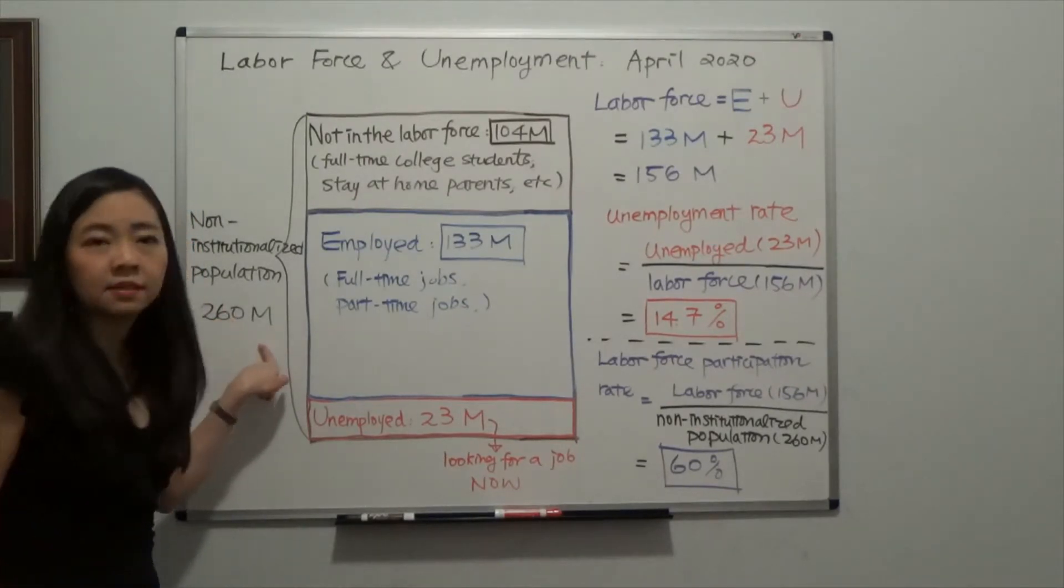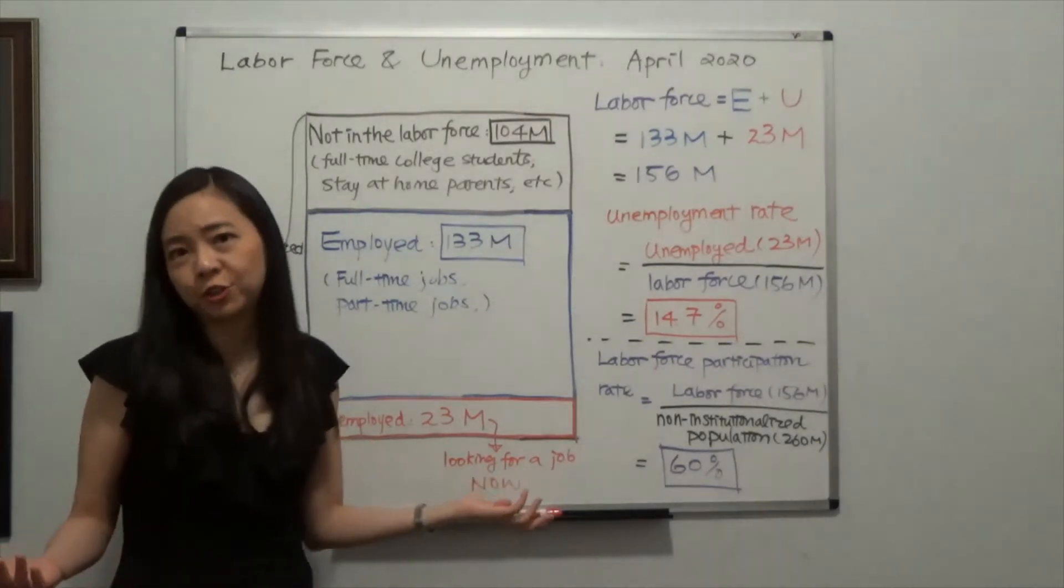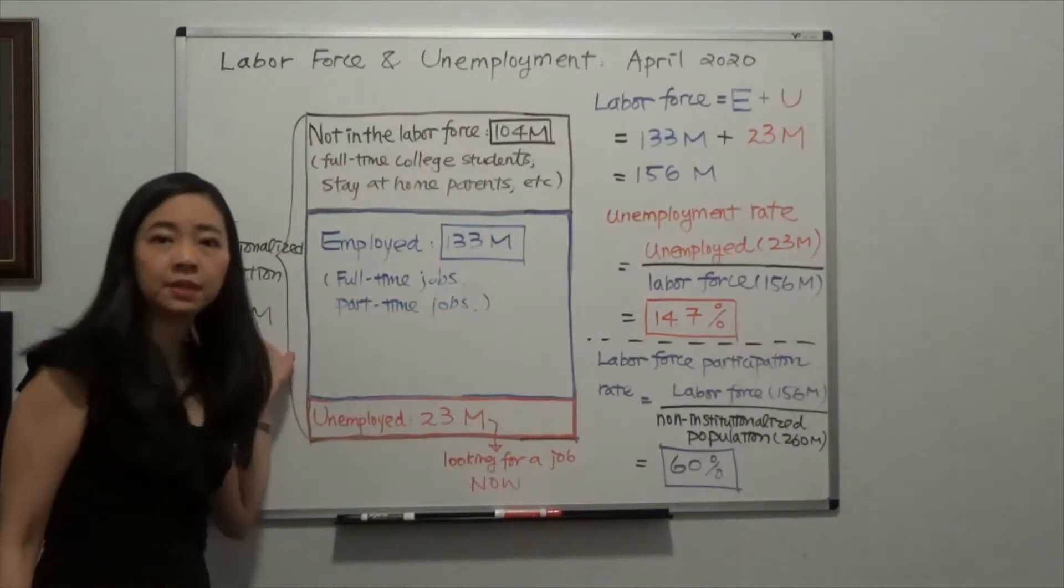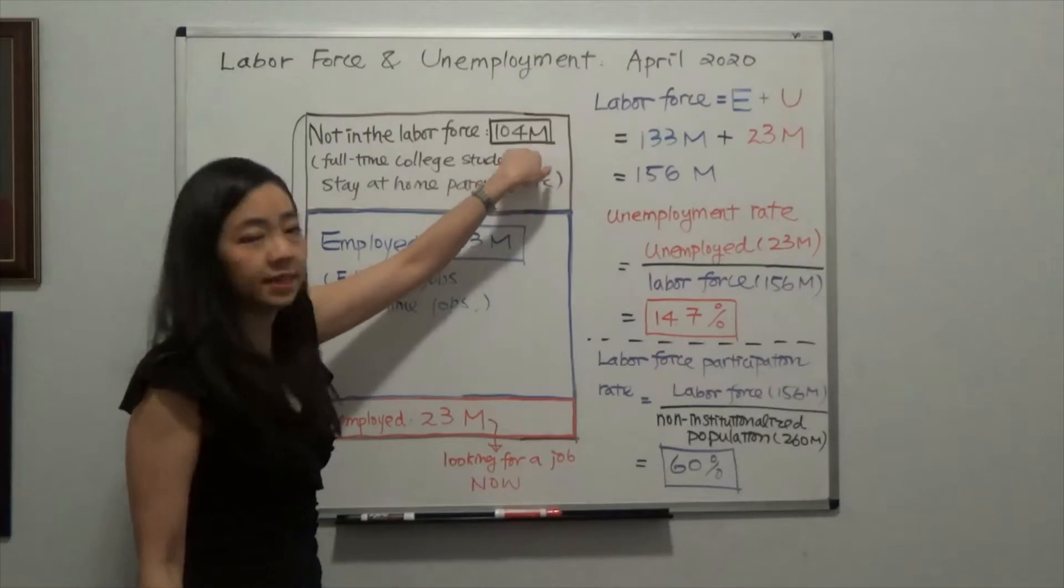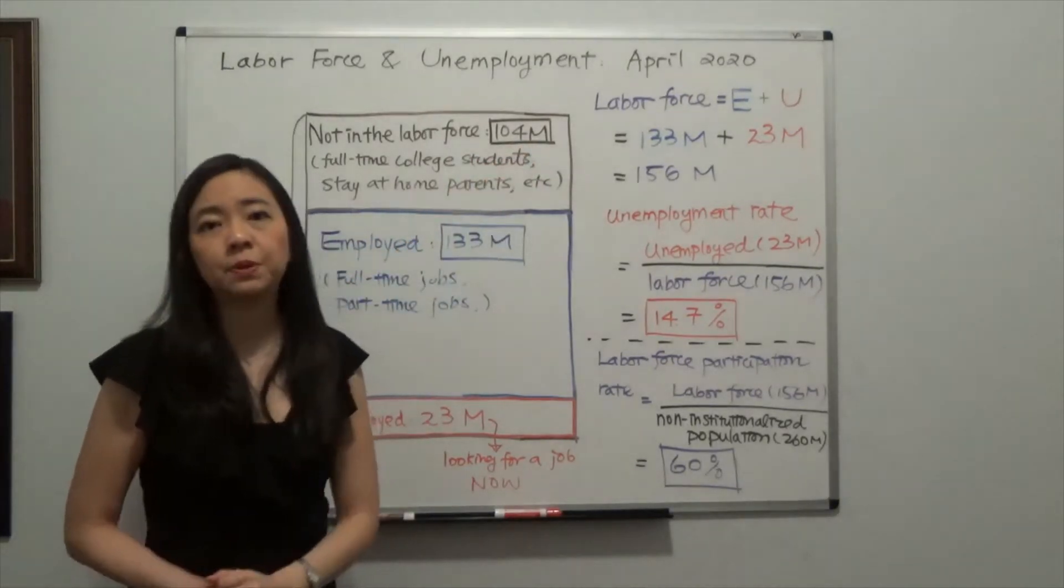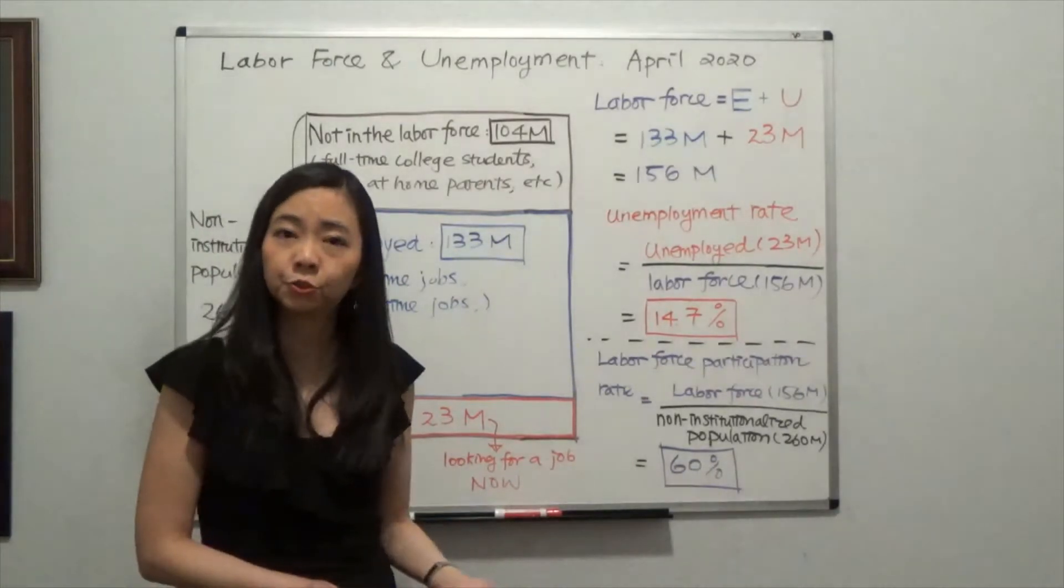This means you are an adult over 16 years old and you're not in jail, for example. Among these 260 million people, 104 million are not in the labor force. This means maybe you are a full-time mom or dad staying at home taking care of children.